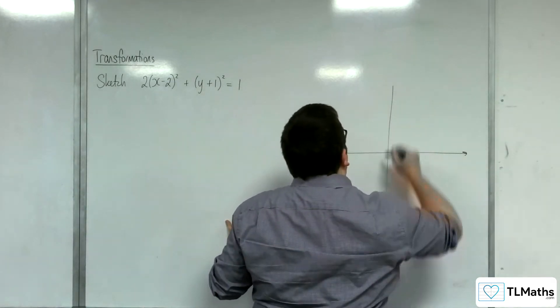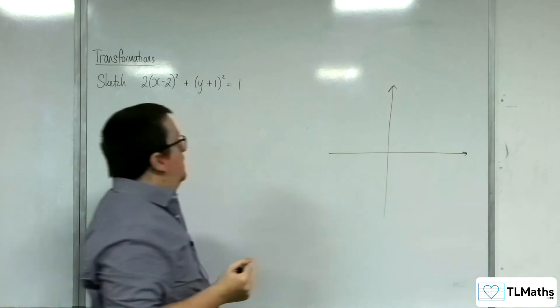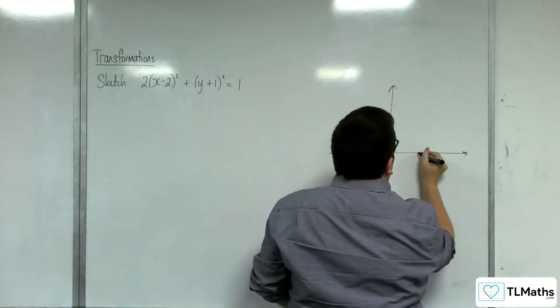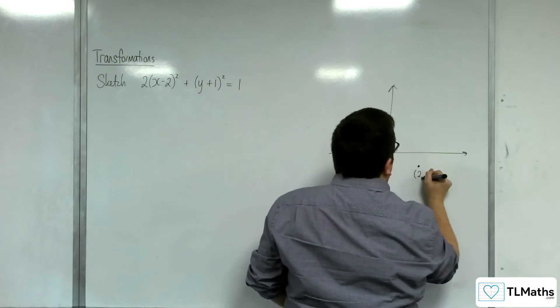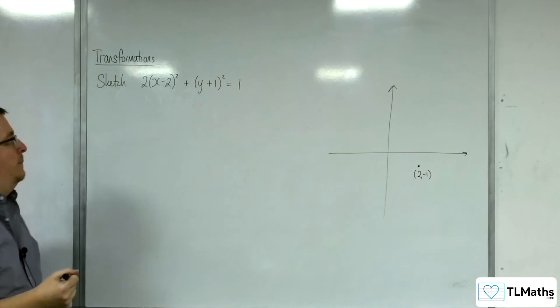So we've had this translation by the vector (2, -1). So (2, -1) is somewhere down here. This is the center of my ellipse.